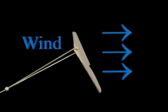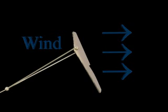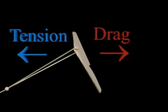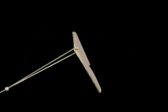The wind blowing past our kite creates lift. Lift is the force acting against the force of gravity, and the string will provide tension. Tension resists the drag created by the wind. This is the finished kite in the air — it is very stable and it flies best in light winds.